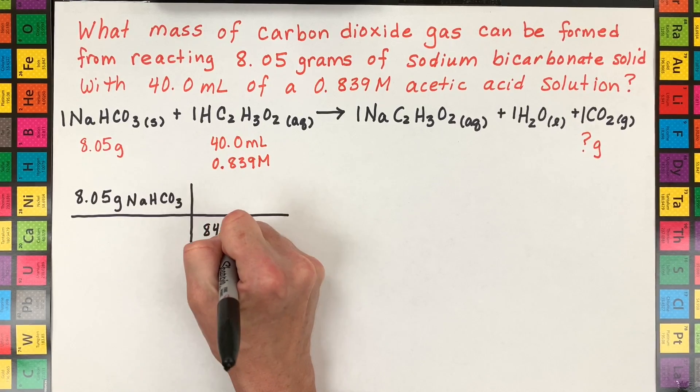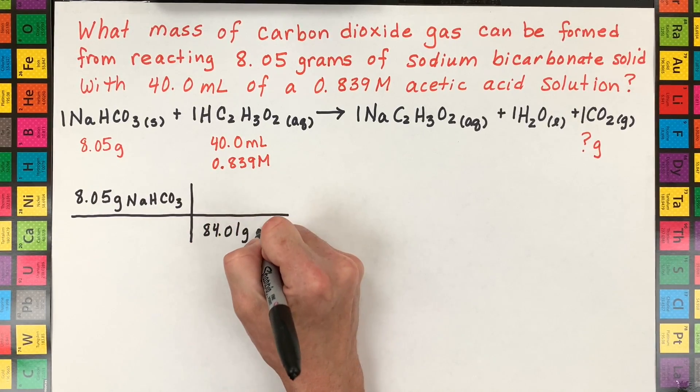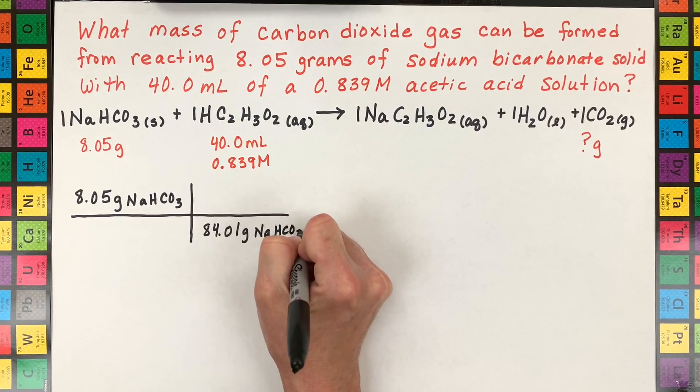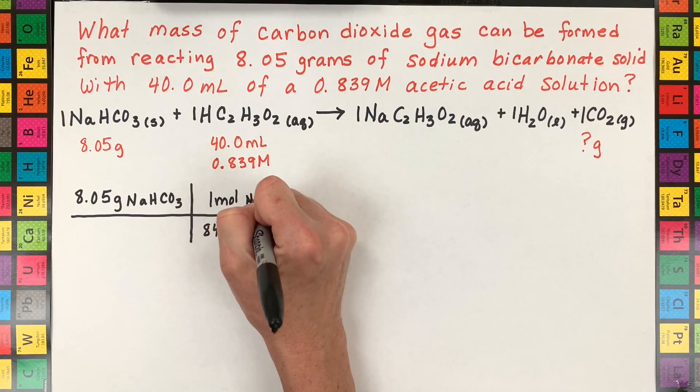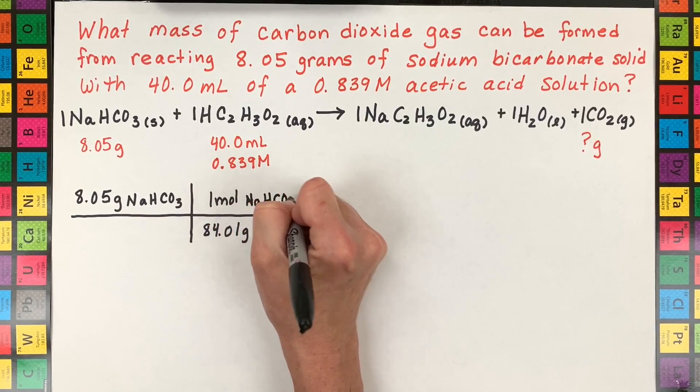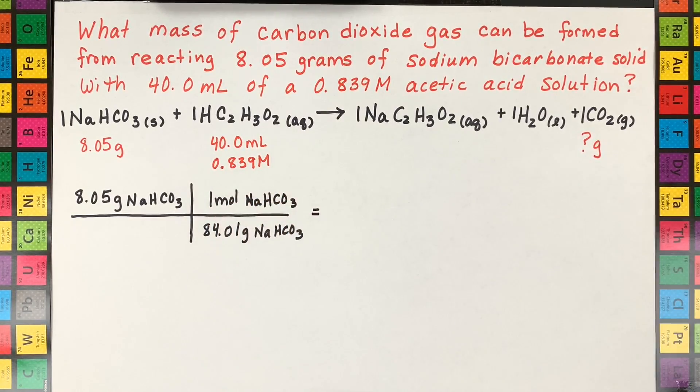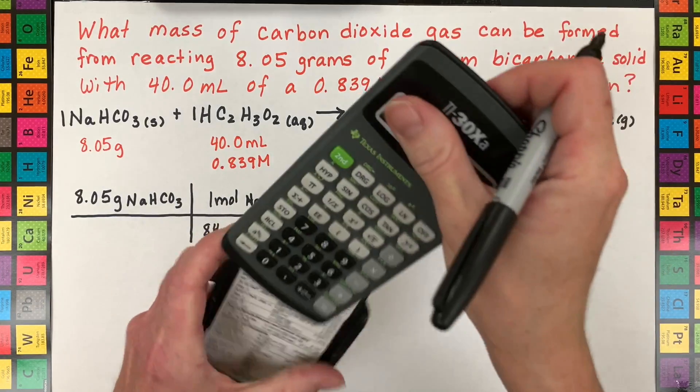The molar mass of sodium bicarbonate is 84.01 grams of sodium bicarbonate for every one mole. So there's our first mole amount we have to calculate.